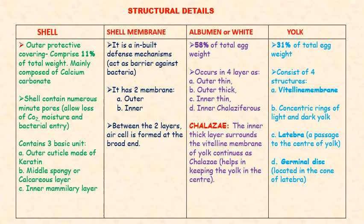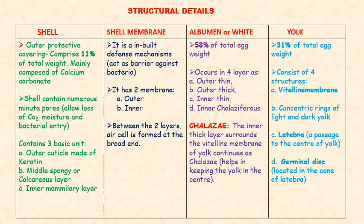Here we will see further details about the structure of the egg. The shell is an outer protective layer making about 11% of the total weight of the egg, and is mainly made up of calcium carbonate. It has a role in respiration and there are pores through which carbon dioxide or moisture can exit. It has got three layers: the outside cuticle, then the spongy or calcareous layer, and the innermost mammillary layer. The shell membrane is an in-built defense mechanism for preventing bacterial entry. It has two layers — outer and inner — and in between these two layers the actual air cell is formed.